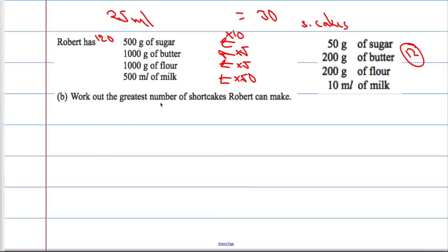So, what is the greatest number of shortcakes he can make? He can only make as much as the smallest amount of ingredients you have. In other words, he can only make 5 times as many using the butter. If he was to try to make 10 times as many, he wouldn't have enough butter. Or if he was to try to make 50 times as many, he wouldn't have enough flour, butter or sugar.